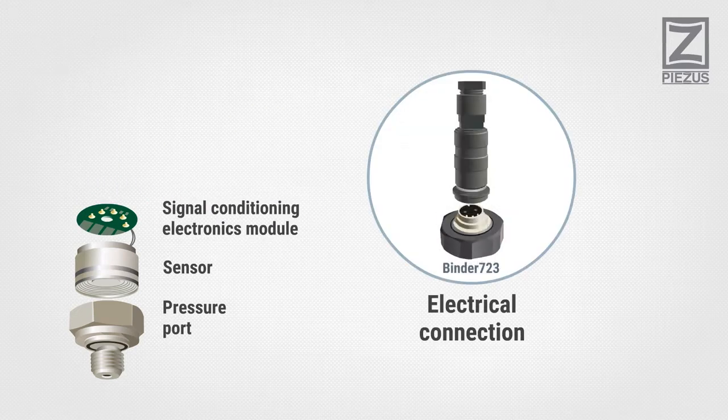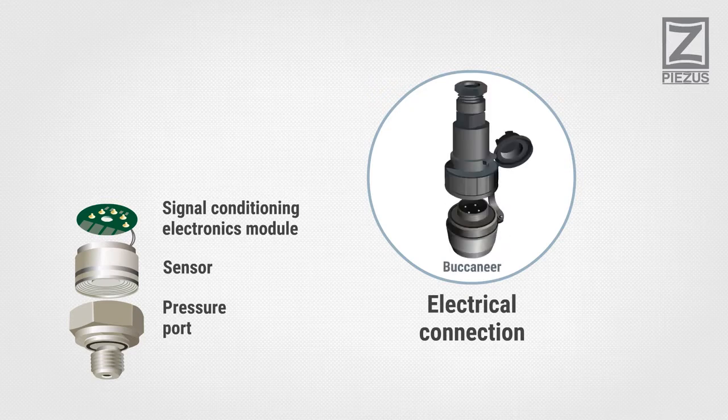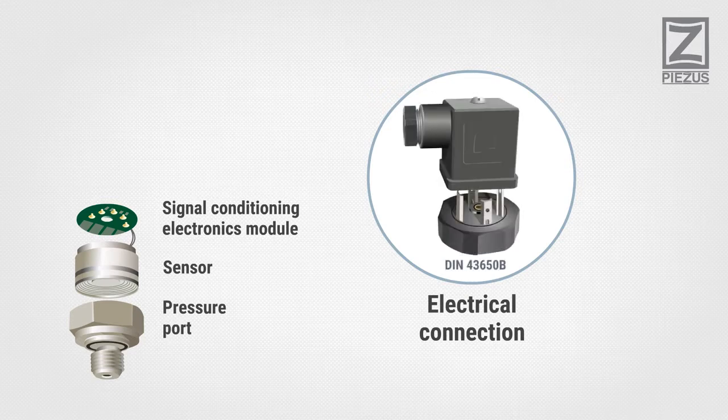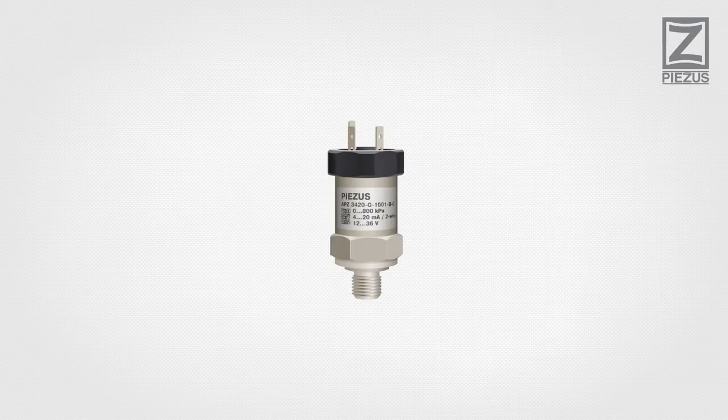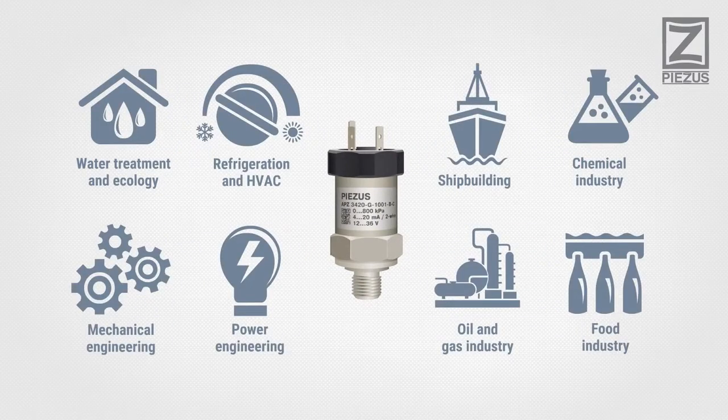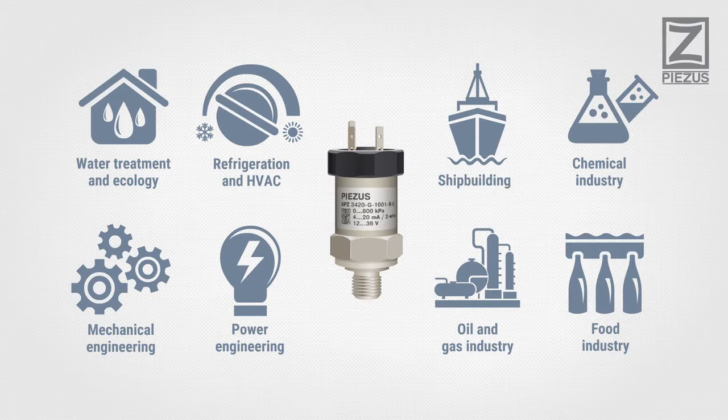Electrical connection is used to wire a pressure transmitter to a measuring system. A wide variety of ordering options allow configuring a pressure transmitter to be successfully used in various technological processes.